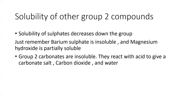Solubility of other Group 2 compounds: solubility of sulfates decreases down the group. A quick way to remember — barium sulfate is a common insoluble salt, and magnesium sulfate is soluble. For hydroxides, magnesium hydroxide is partially soluble, so barium hydroxide must be very soluble. Remember that Group 2 carbonates are insoluble; however, they will react with acid to produce a carbonate salt, carbon dioxide, and water.